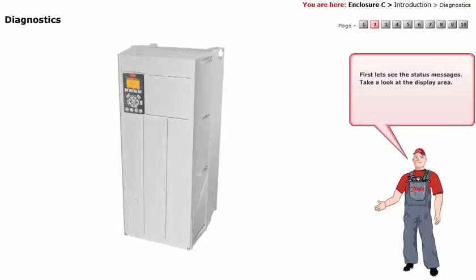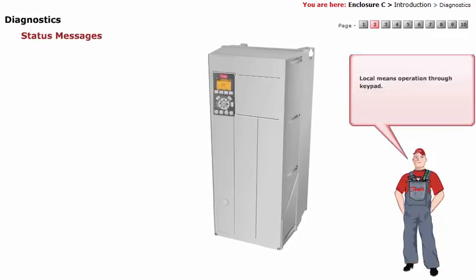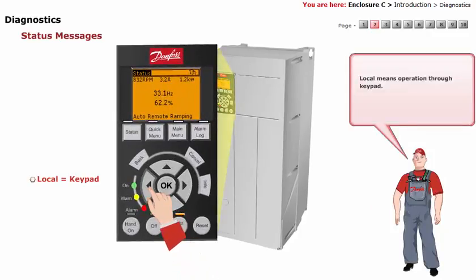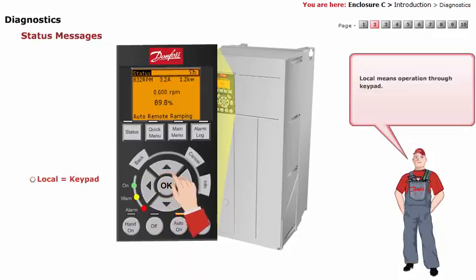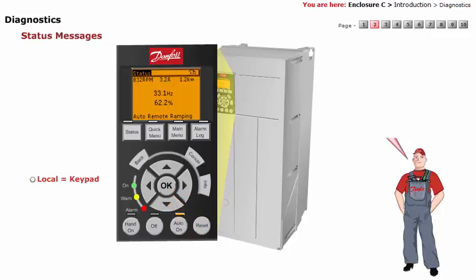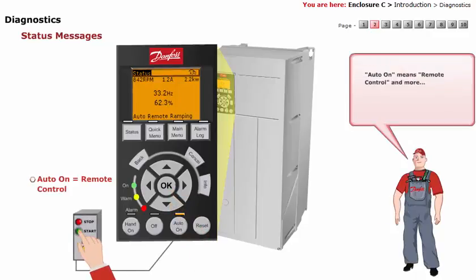First, let's see the status messages. Take a look at the display area. Local means operation through keypad. Auto on means remote control.